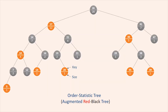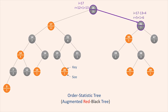To see how OS-Select operates, consider a search for the 17th smallest element in the order statistic tree of the figure. We begin with x as the root whose key is 26 and with i equal to 17. Since the size of 26's left subtree is 12, its rank is 13. Thus, we know that the node with rank 17 is the (17 - 13) = 4th smallest element in 26's right subtree. After the recursive call, x is the node with key 41 and i equals 4. Since the size of 41's left subtree is 5, its rank within its subtree is 6. Thus, we know that the node with rank 4 is the 4th smallest element in 41's left subtree.